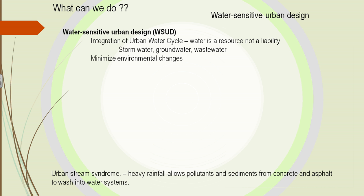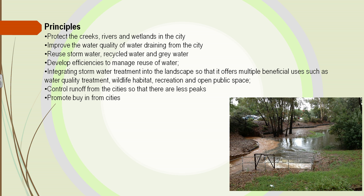We have water-sensitive urban design — where in the cities, how do we deal with our water every time it rains? Remember we have all that concrete and less and less earth for the water to be absorbed in. How do we get water out of the cities safely back into the rivers and streams? How do we stop it from taking pollutants off the concrete and asphalt and moving them into the water systems? We can protect those creeks, rivers, and wetlands in the cities.